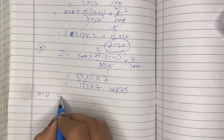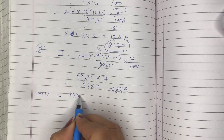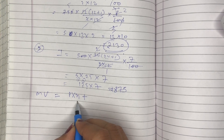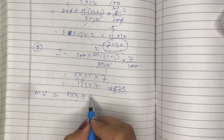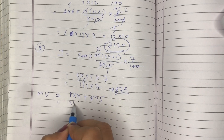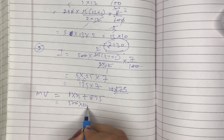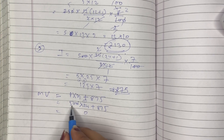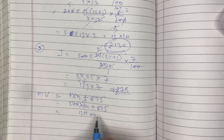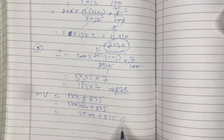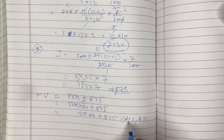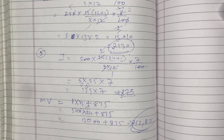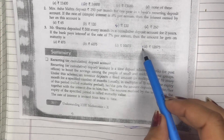Maturity value kya hoti hai? Maturity value = Principal × number of months + interest. Principal 500, number of months 24, interest 875. 500 × 24 = 12,000. 12,000 + 875 = 12,875 rupees. Yahi maturity value hai jo usse after 2 years milne wali hai. Iske liye correct option D hai: 12,875.